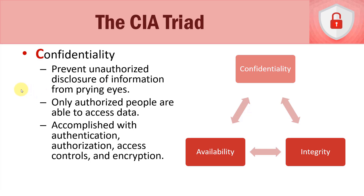Let's take a look at confidentiality. This is probably what a lot of people think about when they think about information security — they think about keeping their data secure. The goal of confidentiality is to prevent the unauthorized disclosure of information from prying eyes. People that shouldn't be looking at data, people that are trying to snoop and look at our data — if we have proper confidentiality in place, they shouldn't be able to do that. Only authorized people are able to gain access to data; if they're not authorized to do so, then they shouldn't be able to do so.